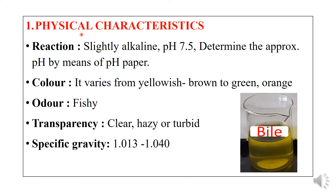Now let us look at the physical characteristics of bile. The pH of bile is slightly alkaline, around 7.5, and can be determined using pH paper. The color is yellowish-brown to green or orange. The odor is fishy. Transparency ranges from clear to hazy or turbid, and the specific gravity lies between 1.013 and 1.040.